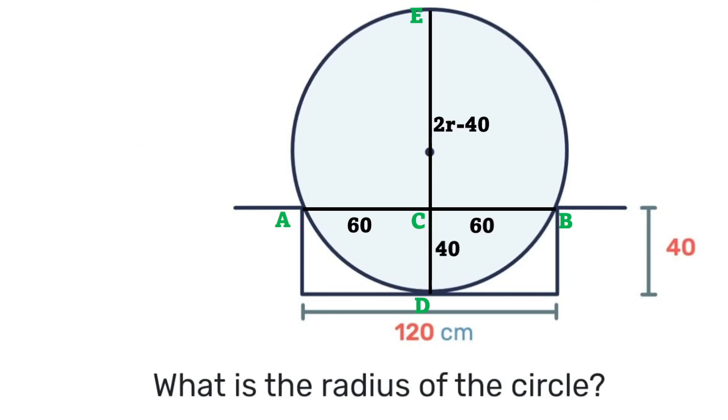Next we can come up with an equation. So according to the intersecting chords theorem, we'll have that CD times CE is equal to CA times CB. So we'll have 40 times (2R minus 40) is equal to 60 times 60.